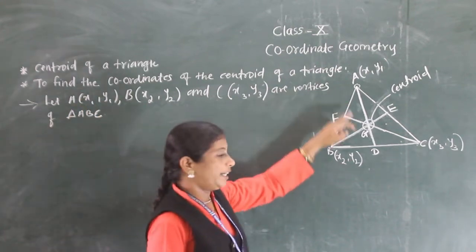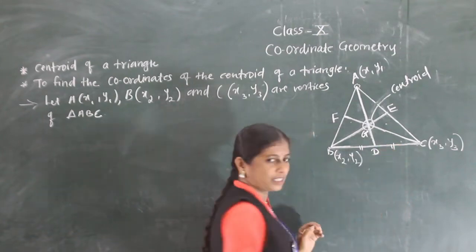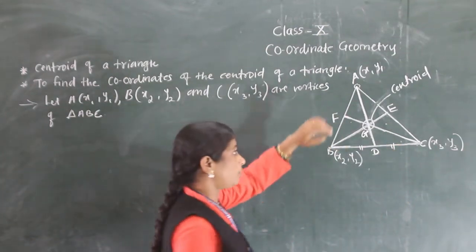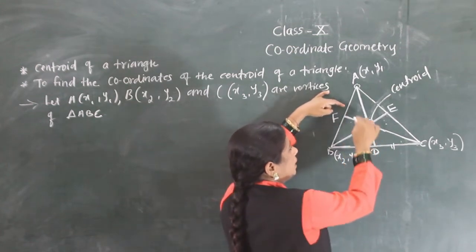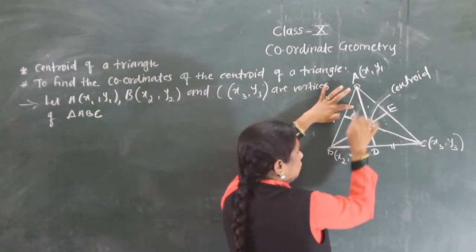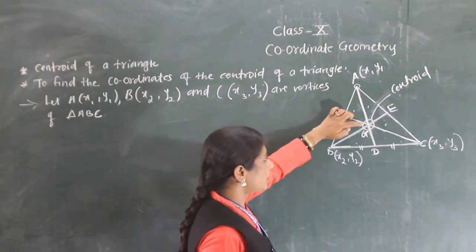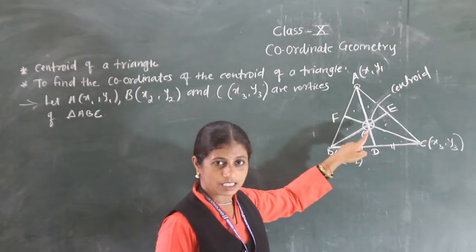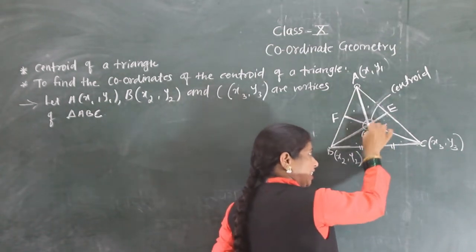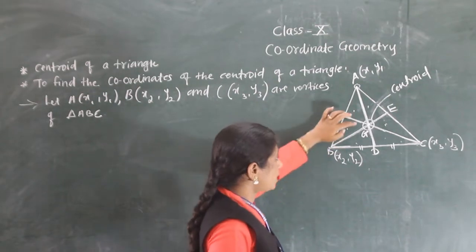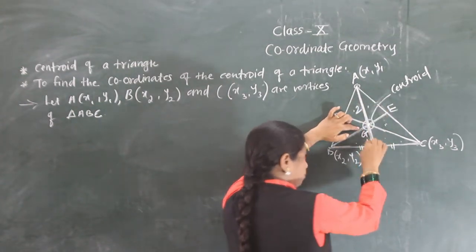Now AD is the median, and it divides side BC into two equal parts. From this figure, we can see there are three medians, and because of these medians, the triangle is divided into 6 smaller triangles. G is the point of intersection of the three medians. AD is the median and G is a point on this median. So G divides AD internally in the ratio 2:1.